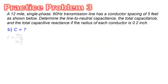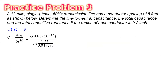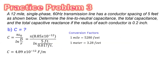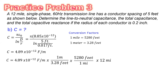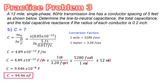To solve for the total capacitance, C equals pi times epsilon zero over ln(d/r). Plugging in the given values gives 4.89 times 10 to the negative 12 farads per meter. Applying the same unit conversions and multiplying by the 12-mile line length, all units cancel and the total capacitance equals 9.46 times 10 to the negative 8 farads, or 94.46 nanofarads.